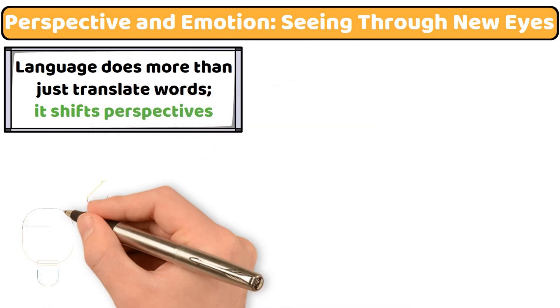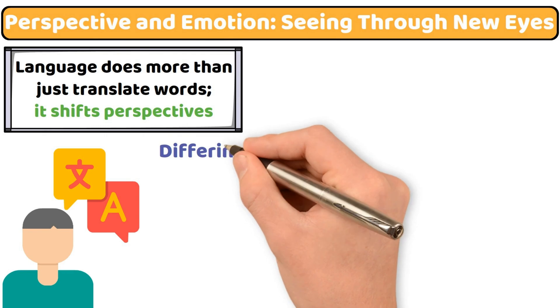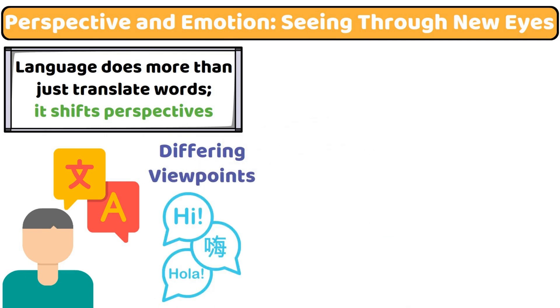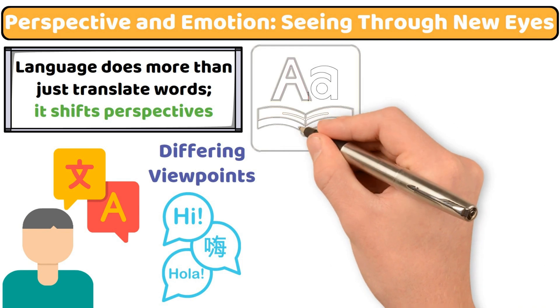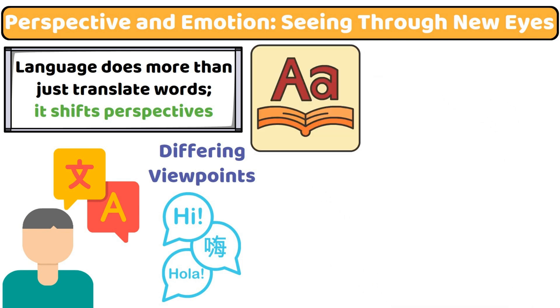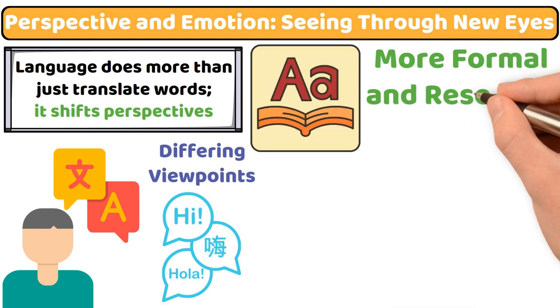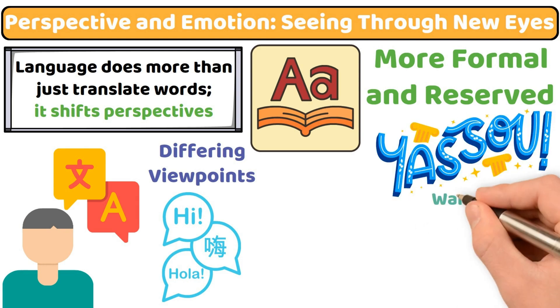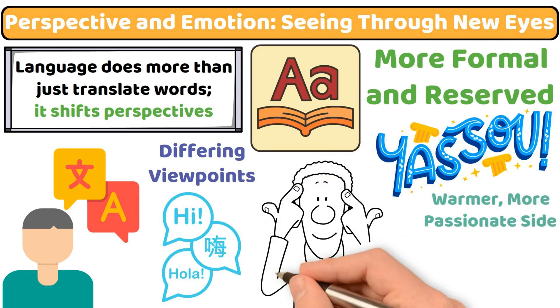Research shows that bilinguals can understand differing viewpoints more easily and even react differently in their second language. When I communicate in English, I often find myself more formal and reserved, while my native Greek brings out a warmer, more passionate side.